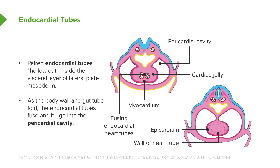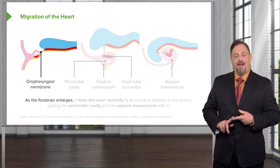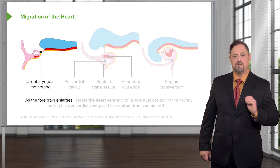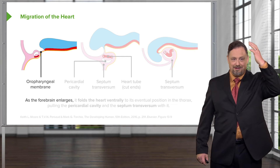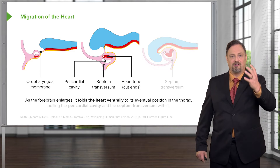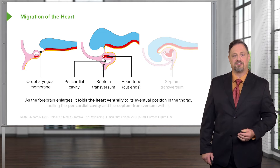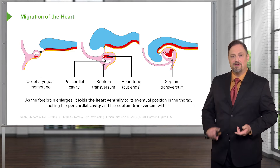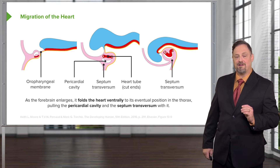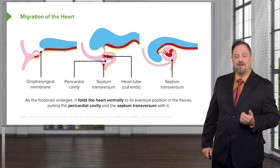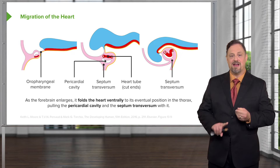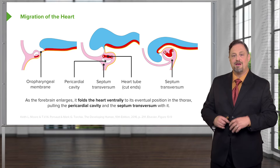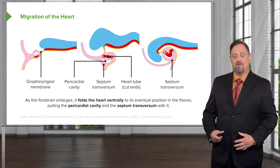The heart is suspended in the pericardial cavity by a dorsal mesocardium, essentially a mesentery of the heart connected to the dorsal side of the embryo. As the heart continues to develop, it moves from its initial location — which is actually anterior to our face — to its final location. As the embryo enlarges and the forebrain gets larger, it folds the heart down into the thorax. As it does so, it pulls the pericardial cavity with it along with a strip of mesoderm called the septum transversum, which takes up residence inferior to the heart and is the earliest primordia of the diaphragm.